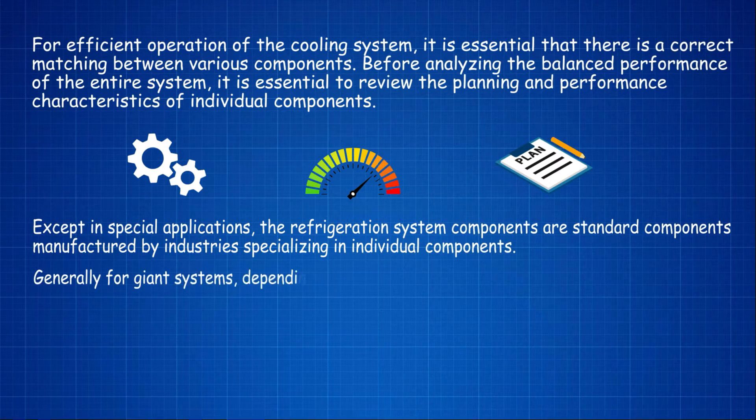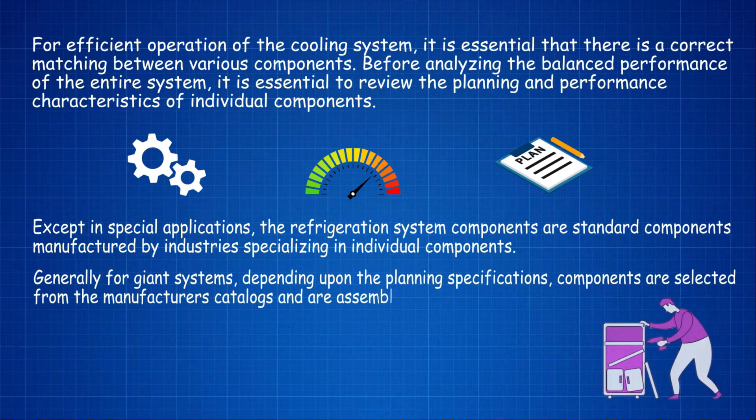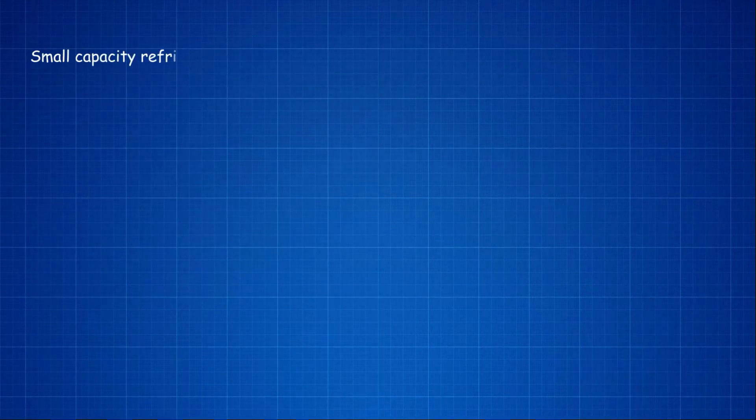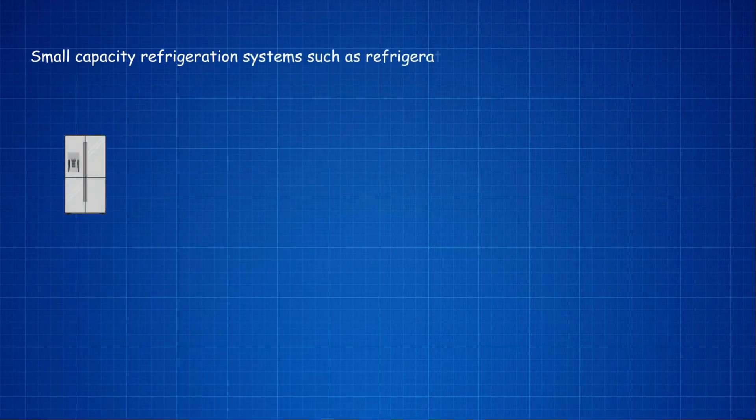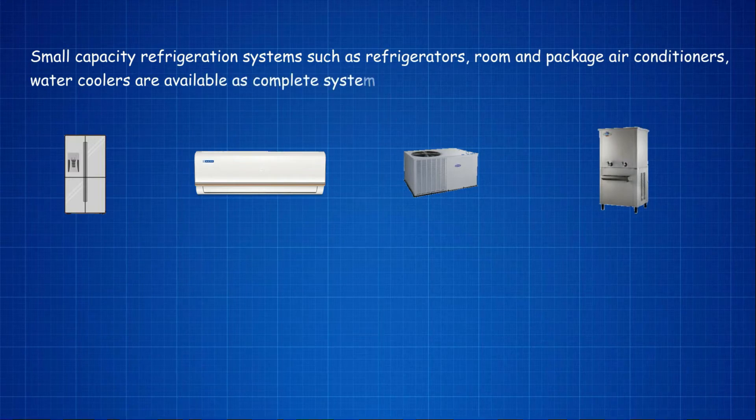Generally, for giant systems, depending upon the planning specifications, components are selected from the manufacturers' catalogs and are assembled at the site. Small capacity refrigeration systems such as refrigerators, room and package air conditioners, water coolers are available as complete systems.